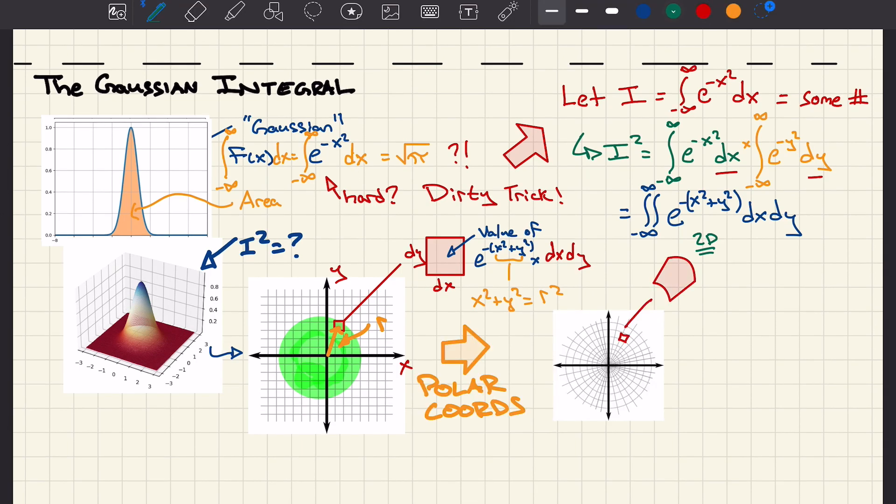The little area elements have width r d theta and length dr, and instead of dx dy an area element is r dr d theta. So r goes from 0 to infinity, theta goes from 0 to 2 pi, and that's how we cover the entire plane.